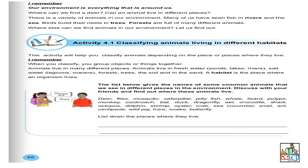Cette activité va nous aider à pouvoir classifier les animaux dépendant leur place ou les places où ils vivent. C'est important de savoir qu'un animal peut vivre dans différents types d'endroits. Par exemple, fish, ça peut être in rivers and sea as well. Donc par exemple, les poissons, ils peuvent vivre dans la rivière mais aussi dans la mer. Allons continuer! I remember when you classify, you group objects or things together. Animals live in many different places.